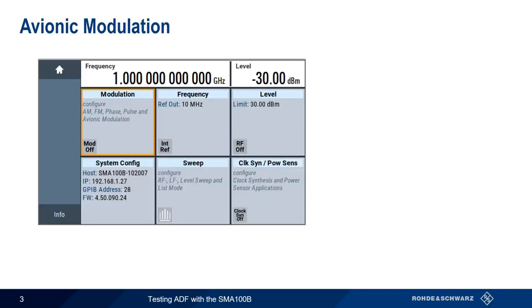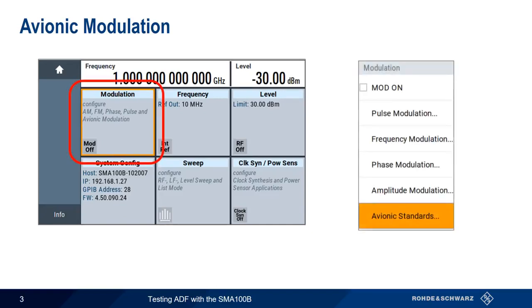To access the different avionics modulation types on the SMA-100B, including ADF, first select the modulation tile, then choose Avionics Standards from the list of available modulation types.